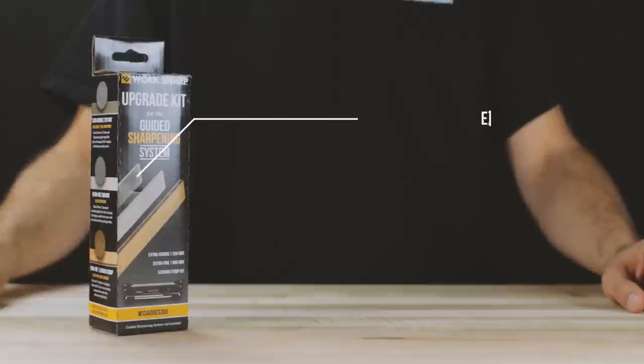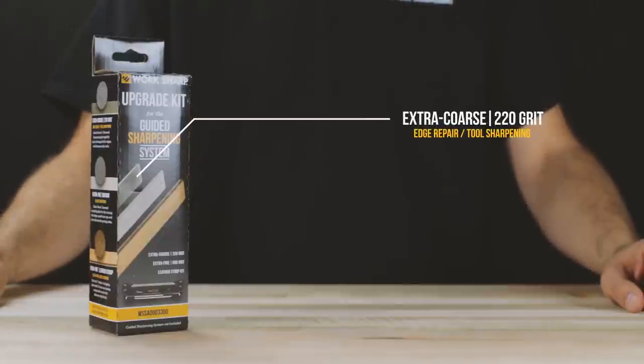Expand your guided sharpening system's capability with an extra coarse 220 grit diamond plate for heavy tool sharpening and blade repair.